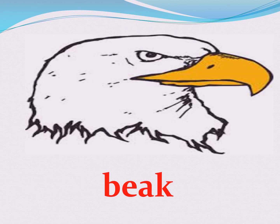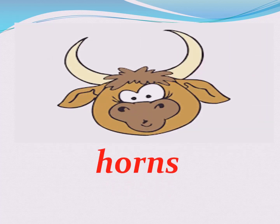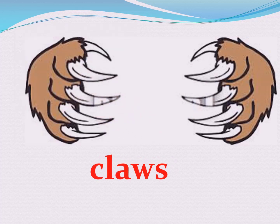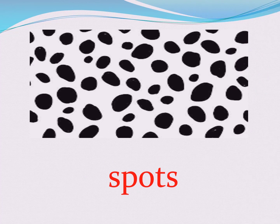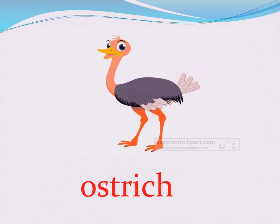Now let's identify our new vocabularies through these flashcards. Beak — which means منقار, the beak of any bird or animal. Horns — which means القرون. Claws — which means مخالب. Spots — which means النقاط أو البقعة. Ostrich — which means نعامة.